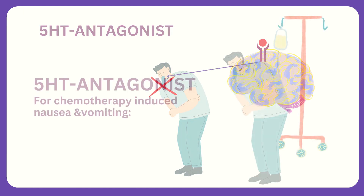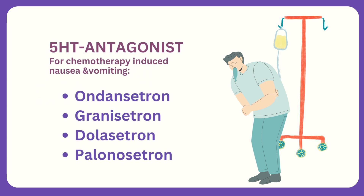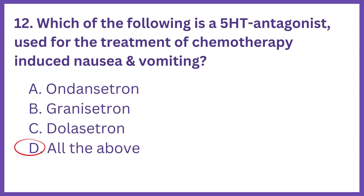Common 5-HT antagonists used for the treatment of chemotherapy-induced nausea and vomiting include ondansetron, granicetron, dolacitrin, and palinositrin. The answer is Option D, all the above.